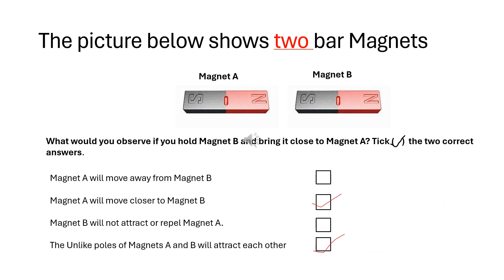The picture below shows two bar magnets — Magnet A and Magnet B. What would you observe if you hold Magnet B and bring it close to Magnet A? Tick the two correct answers. The two correct answers are: Magnet A will move closer to Magnet B, and the unlike poles of Magnets A and B will attract each other.